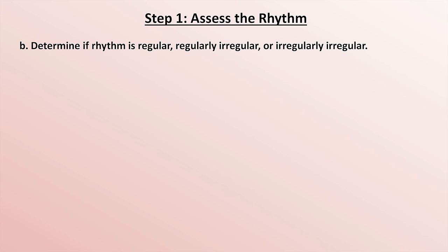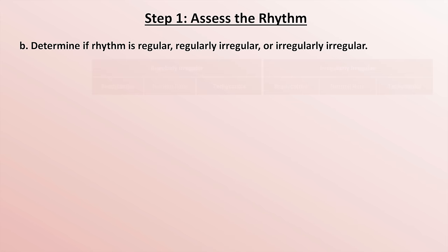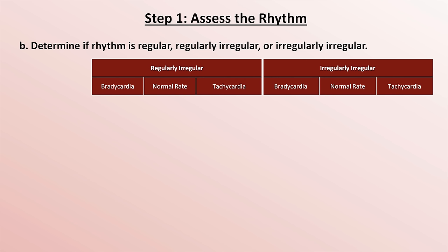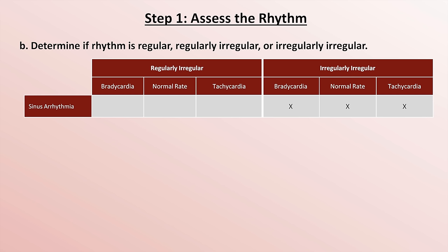Excluding those which are exceedingly rare, there are essentially seven different irregular rhythms. Sinus arrhythmia, in which P waves are originating from the sinus node but just at irregular intervals — often from primary sinus node dysfunction — can cause an irregularly irregular rhythm that can be slow, fast, or at a normal rate.